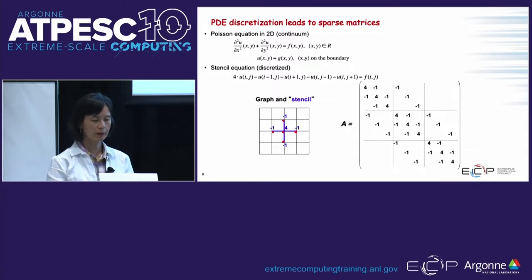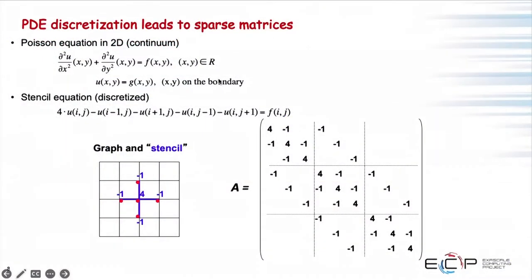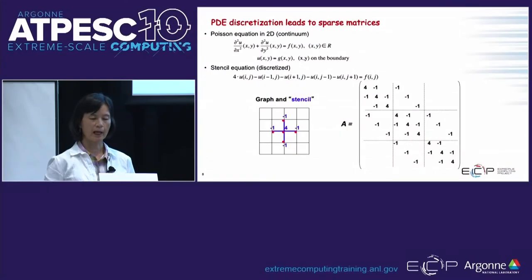Many people are familiar with the Poisson equation, which is a standard model problem and was also introduced in today's introductory lecture. This is the 2D case. Using the finite difference stencil to discretize it, at each point you have four neighbors. When you put these neighbors into matrix form, the discretized points are on the main diagonal and the four neighbors are off-diagonal. Ordering by row, two neighbors are just one sub-diagonal apart, but the other two are order k apart, where k is your 1D mesh size.